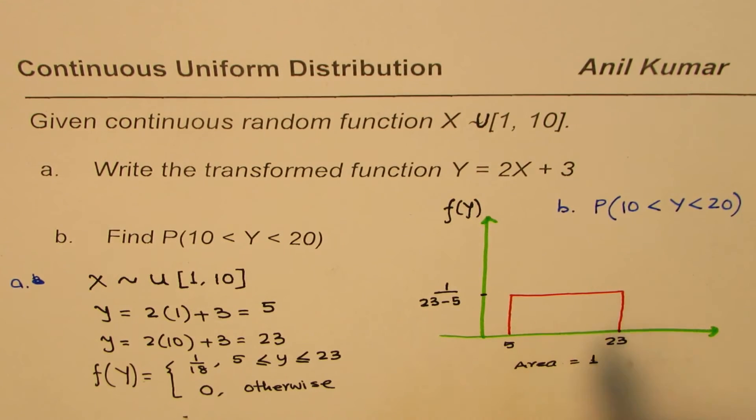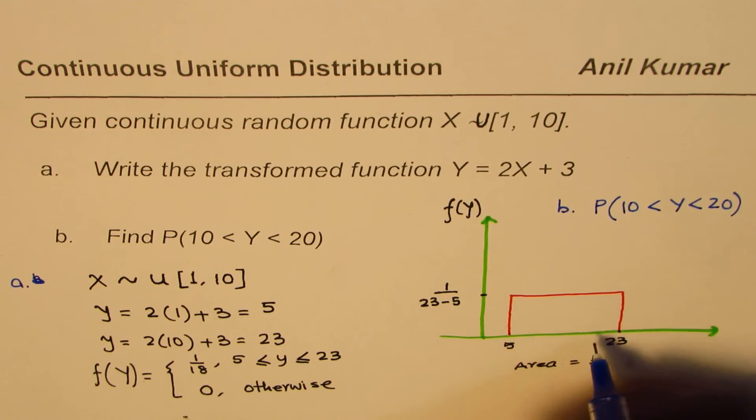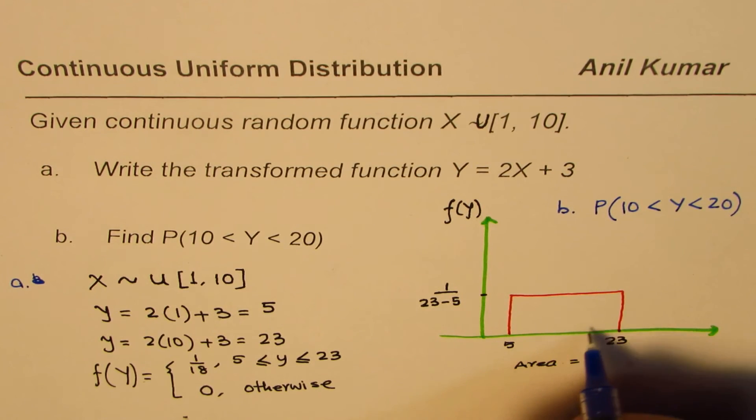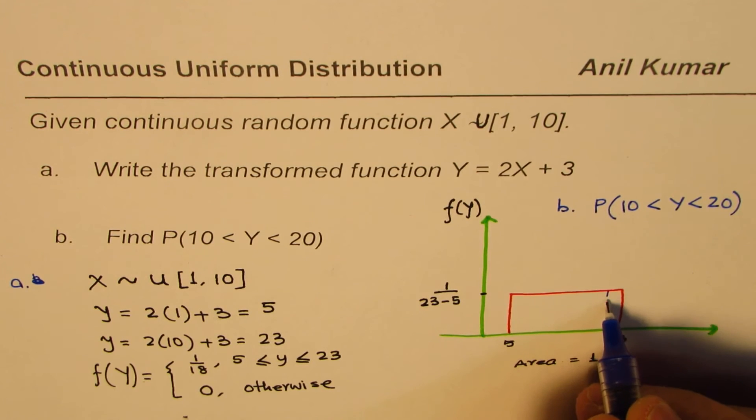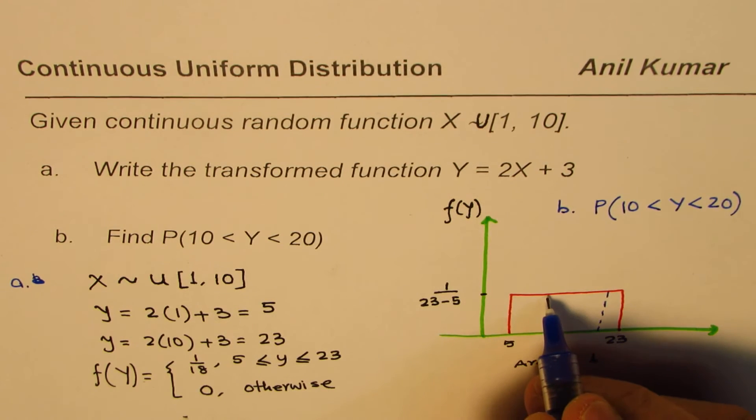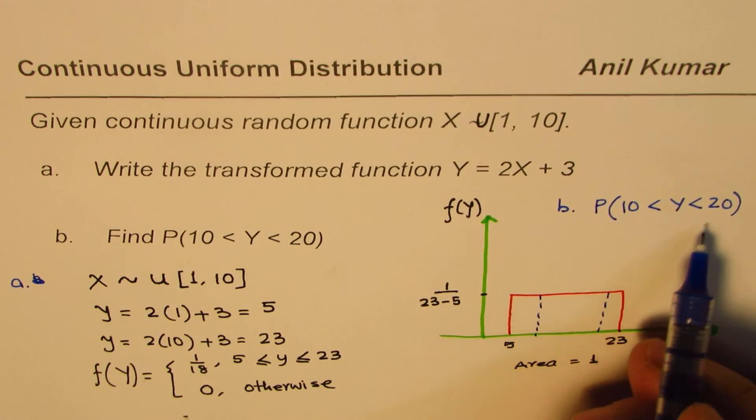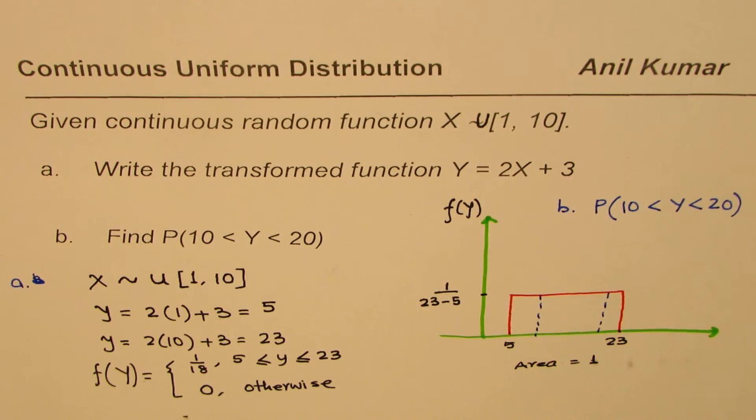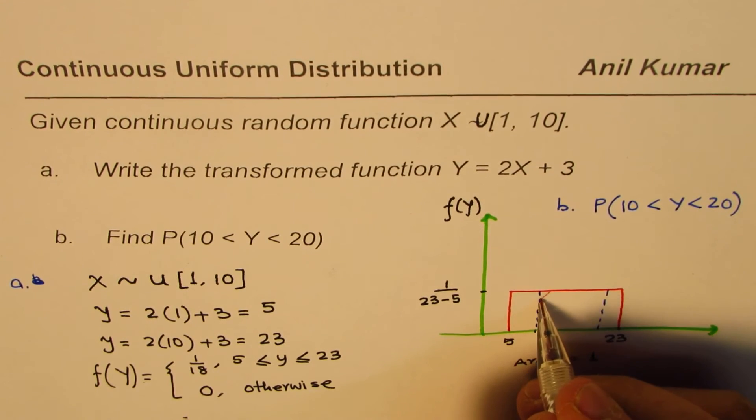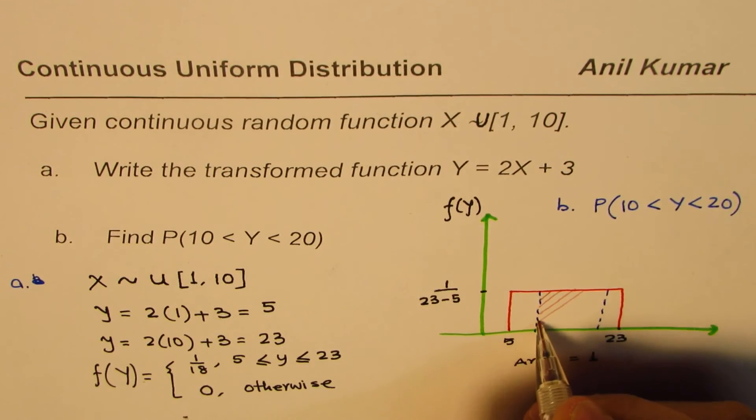So in part B, we want to find the probability for the random variable Y to be within 10 and 20. So within 10 and 20 will be, let us say, let us say that is 20 for us. And let us say this is 10 for us. Then the probability is defined by the area within this region, right? So the area gives you the probability, this area.